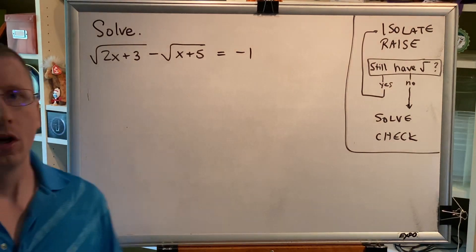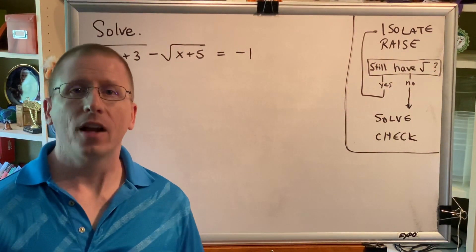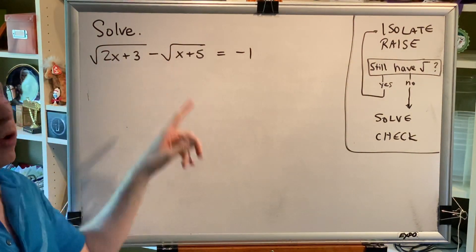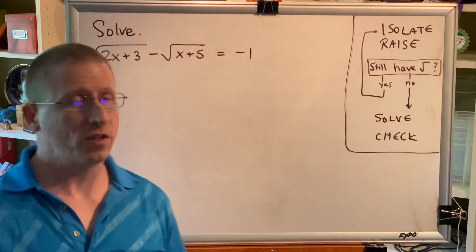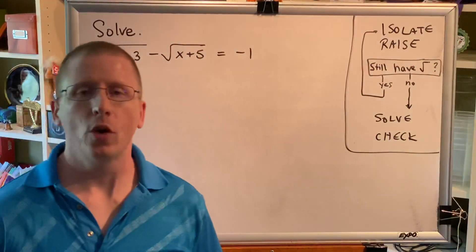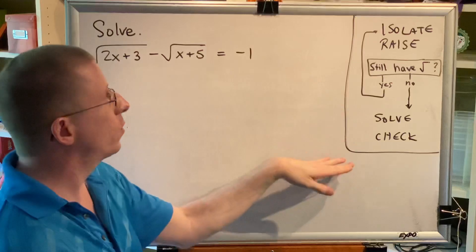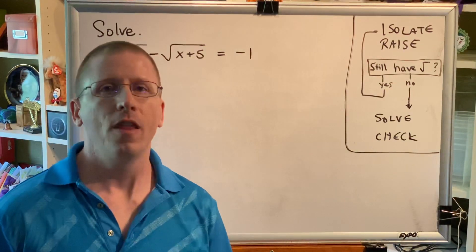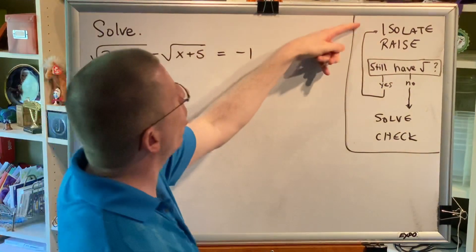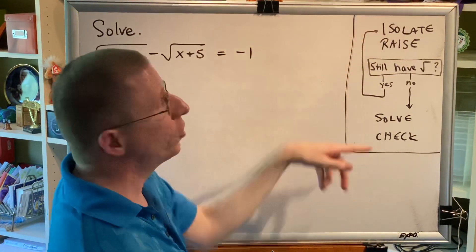By now we've gotten used to the idea that this is a radical equations problem — equals radical. But what makes this problem so interesting is that there are actually two radicals. The four steps for this problem are a little more complicated than what we covered in the previous two videos. The steps we said previously were isolate, raise, solve, check. And that's still true.